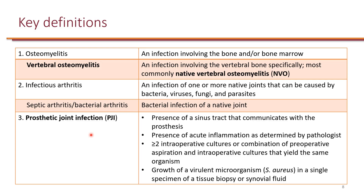If only one culture grows an organism but it is a virulent microorganism such as staph aureus, that also constitutes a diagnosis of prosthetic joint infection. By aspiration, I'm referring to when we draw fluids from the joints — so synovial fluid aspiration.